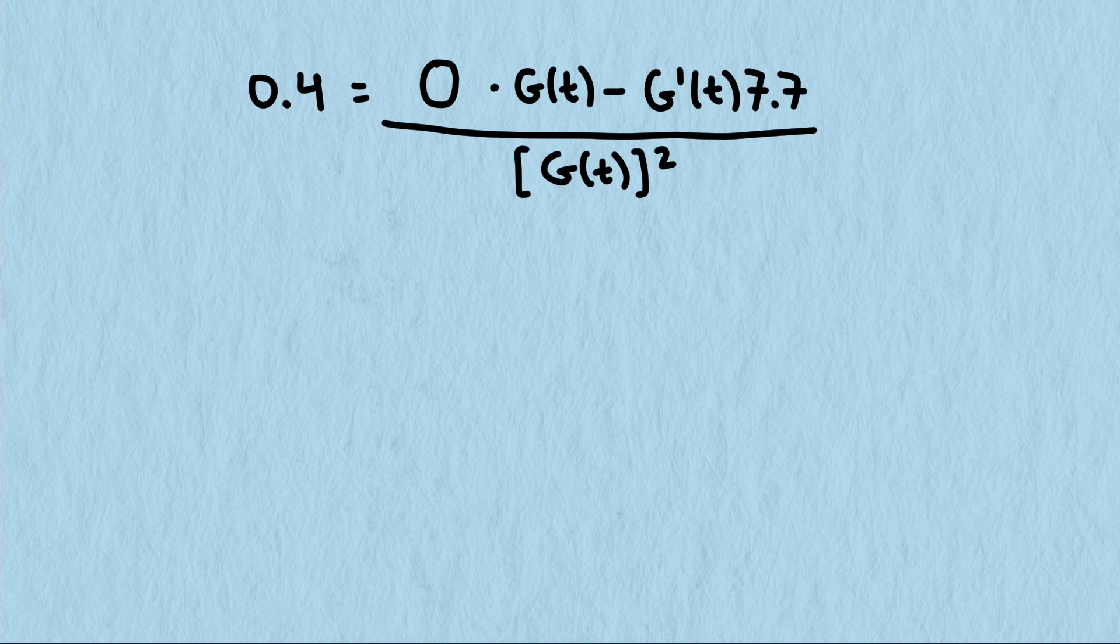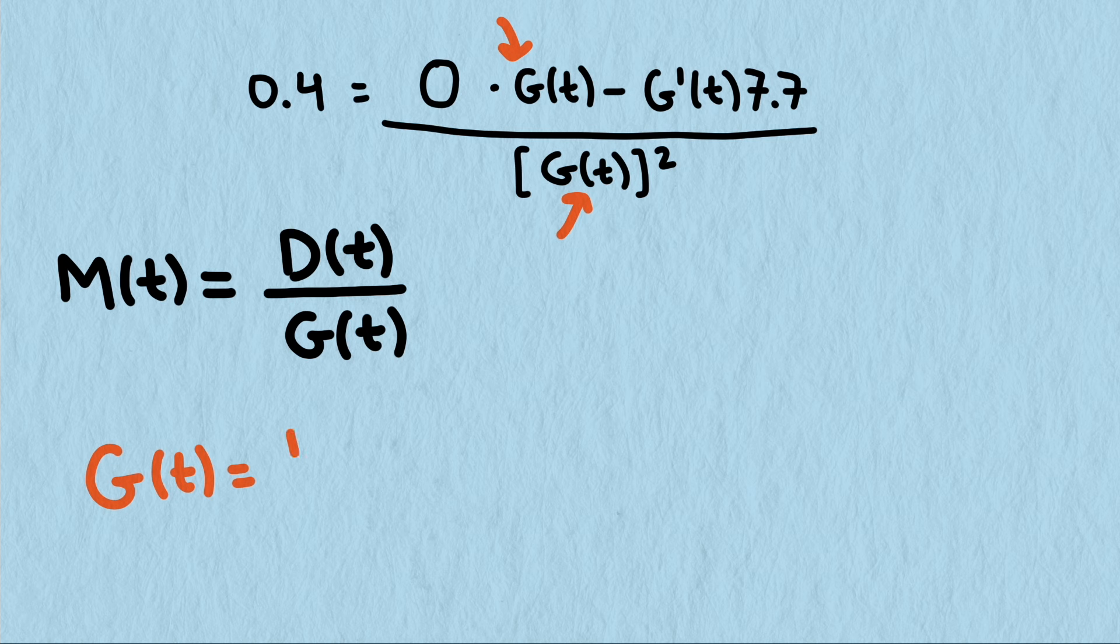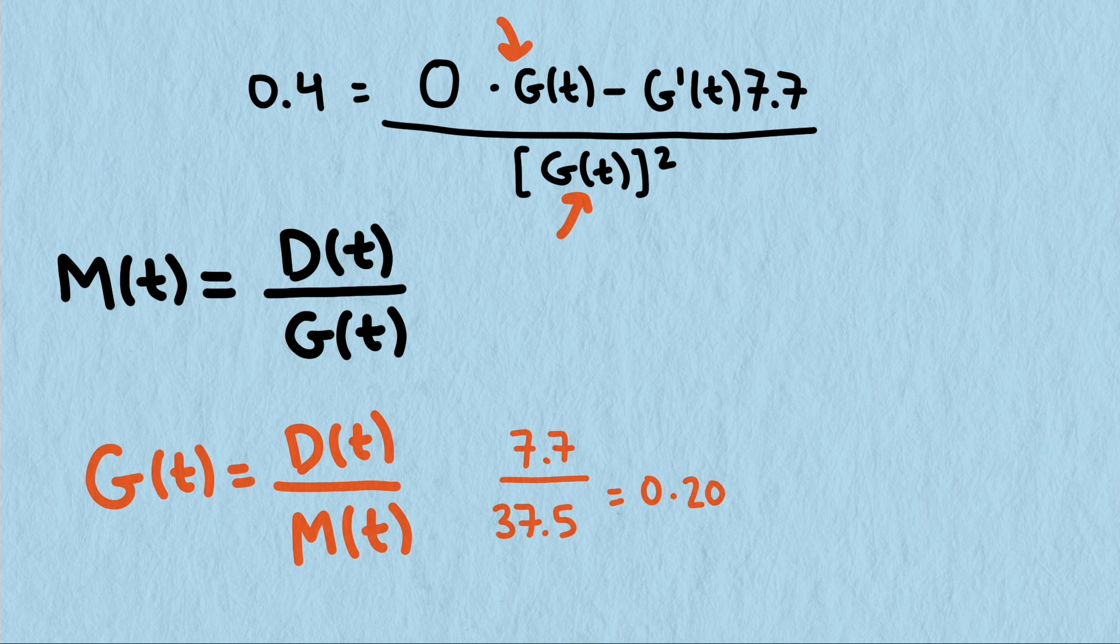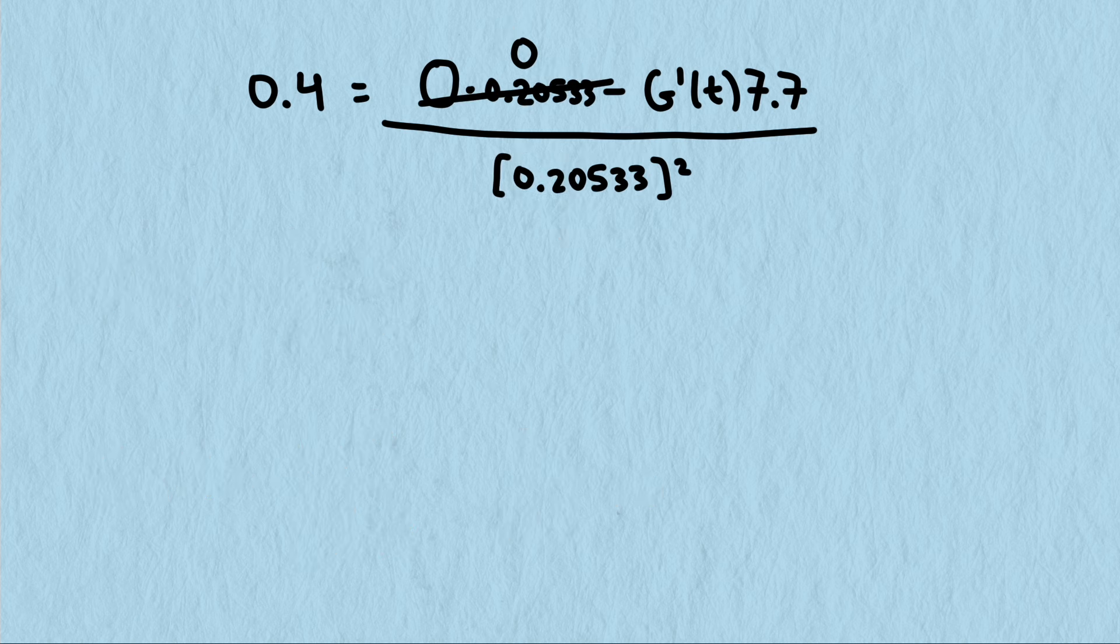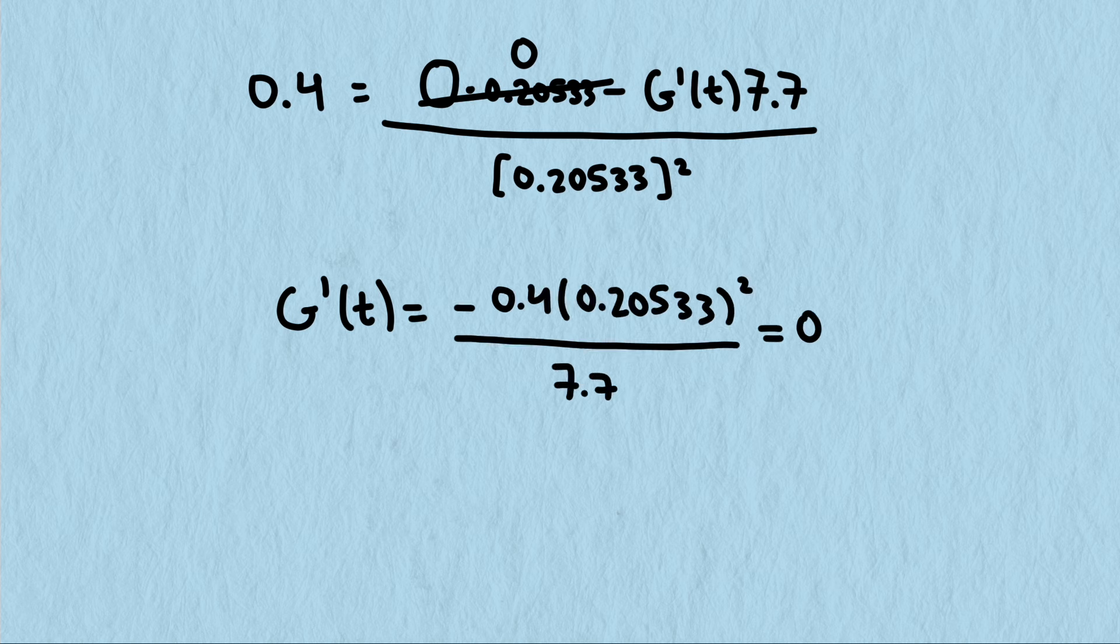Next I have to do a little calculation to find how much gas I used. I can solve the original mileage equation for g and divide my distance by my mileage to get 7.7 divided by 37.5 equals 0.20533 gallons. Plugging in all of these values and solving for g prime gets us a value of 0.00219 gallons per minute.